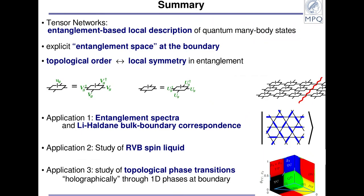To summarize: I introduced tensor networks as a way to describe quantum many-body systems from the point of view of their entanglement. One great feature is that they give us an explicit entanglement space at the boundary. I discussed how topological order can be understood from local symmetries, and also how global symmetries can be understood from local symmetries. I explained how this gives an understanding of edge-boundary correspondence in the sense of Li-Haldane in a rigorous way. I showed how this allows us to conclude that the resonating valence bond state is a topological spin liquid. And finally, I discussed how this allows us to classify and also numerically study topological phase transitions in a kind of holographic way through their entanglement properties.